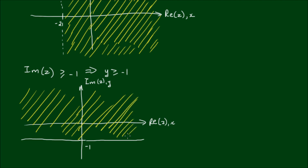So again, the shaded region is the locus of z, given the condition that the imaginary part of z is greater than or equal to negative 1.